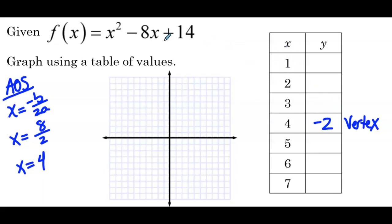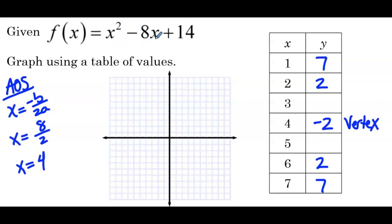For x = 1: 1 − 8 + 14 = 7; by symmetry x = 7 also gives 7. For x = 2: 4 − 16 + 14 = 2; by symmetry x = 6 gives 2. For x = 3: 9 − 24 + 14 = −1; by symmetry x = 5 also gives −1. So we can plot all these points.